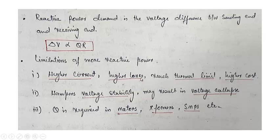If we try to minimize these issues, we have to increase the cross section of the conductor. We cannot control the higher current, but we can reduce the losses by having a higher cross-section area of the conductor, thereby reducing its resistance. Losses will reduce and the conductor may not reach the thermal limit, but it will result in higher cost.